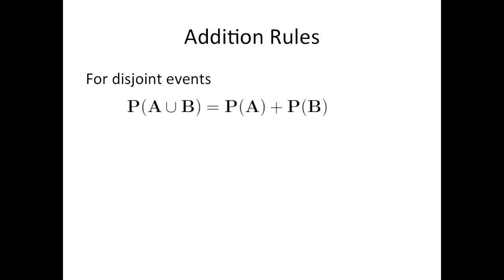The addition rule that you apply is going to depend on whether or not you're working with disjoint events. Events are disjoint when they do not occur together. For disjoint events, the probability of A or B equals the probability of A plus the probability of B.